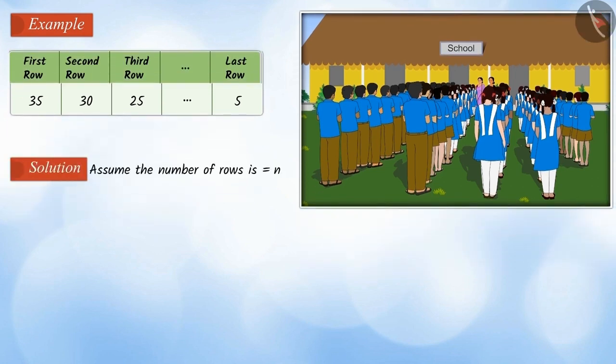Let the number of rows be N. Then, the first row that is the first term A equals 35. The common difference of the row D equals minus 5. And here, the last term that is AN equals 5. We have to find the number of rows of students. Therefore, we have to find the value of N.